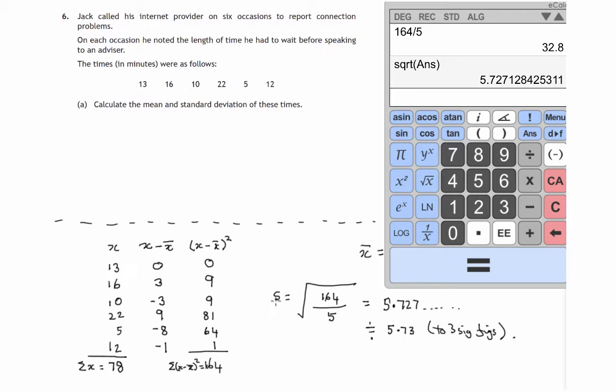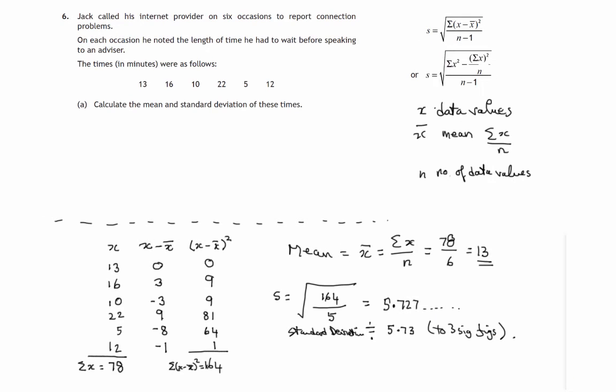So standard deviation - just to be clear so the examiner knows which values, which standard deviation and mean. Let's get rid of this so we can see what we've done there. The mean x bar is equal to 13, so there's our two answers: 13 and 5.73.